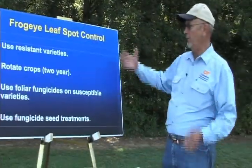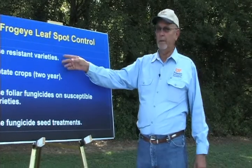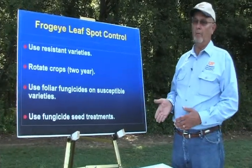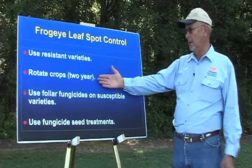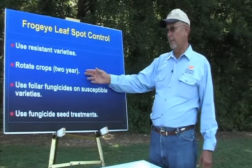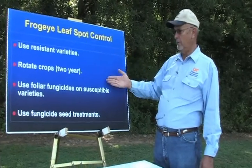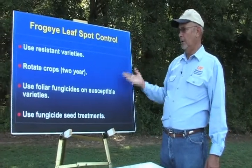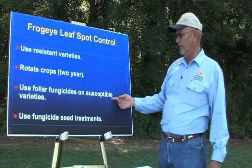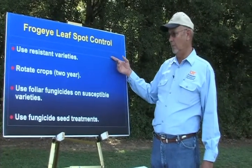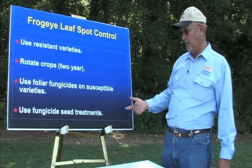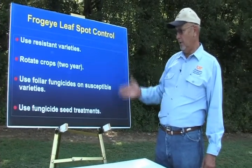To control foliar leaf spot, the number one thing is to use resistant varieties. There are a number of varieties that are totally resistant. We should rotate our crops — two years out of beans will do a very good job in reducing, though not completely eliminating, the amount of all of these diseases. Using foliar fungicides is especially important on susceptible varieties or where you've had beans after beans for several years.